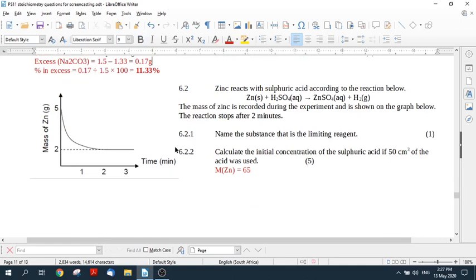Alrighty let's look at the next part of this question. Zinc reacts with sulfuric acid according to the reaction below. Zinc plus sulfuric acid goes to zinc sulfate plus hydrogen. The mass of zinc is recorded during the experiment and is shown on the graph below. The reaction stops after two minutes. Okay so if we look at the graph we started with five grams of zinc and we ended with two grams of zinc. So this means that there is zinc left over. So zinc cannot be limiting.